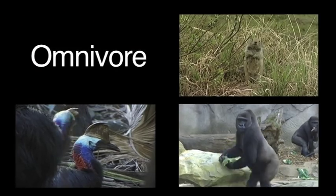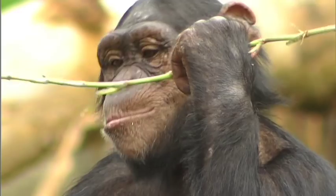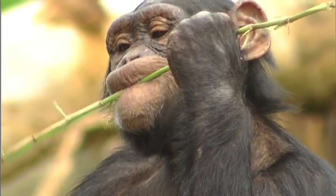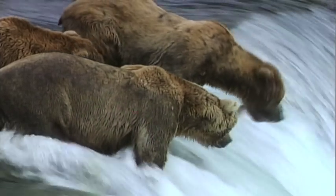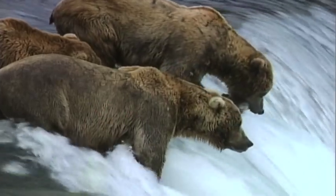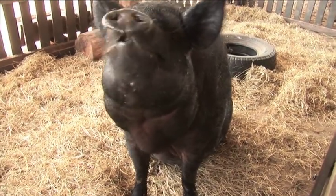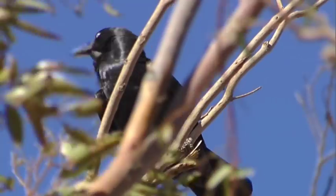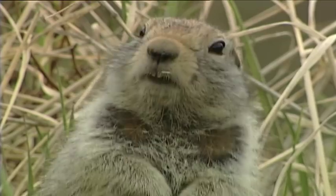Omnivores are animals that eat both meat and plants. Their diet, therefore, is quite varied. A bear is an omnivore that eats fish and meat, as well as grasses, nuts and berries. Other examples of omnivores are pigs, crows, cassowaries and squirrels.